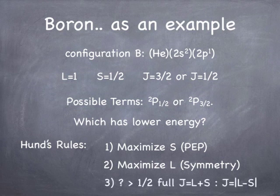And finally, if the shell is greater than half full, the J you want to use is L plus S. But if it's less than half full, you want to use L minus S. Well, this shell is certainly less than half full. There's room for six electrons, and we only have one. So that means that the J is going to be L minus S. So the correct term is the 2p1 half. That's kind of how it works.